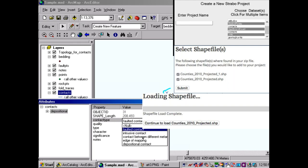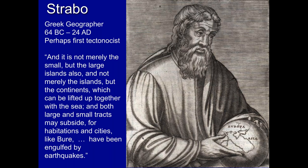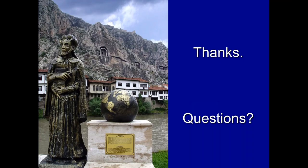Why is it called Strabo? Strabo was a Greek geographer and probably the first structural geologist and tectonicist. He figured out that earthquakes could raise and lower the ground surface and that changes in where the sea and continents were somehow related to geologic processes.